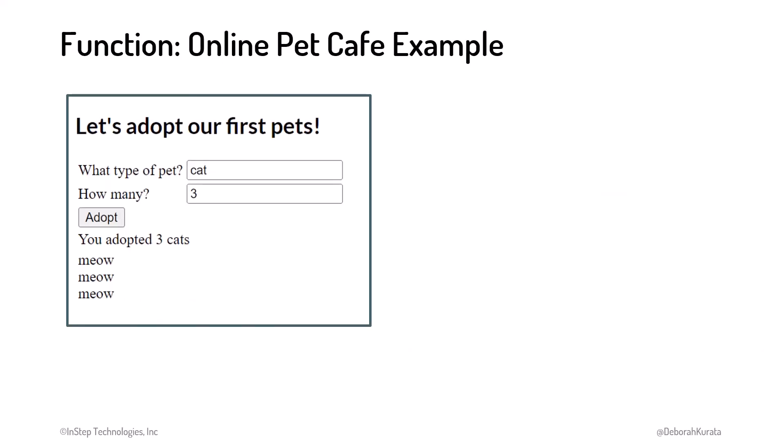Let's look at another example from our online pet cafe. Recall that the user enters the type and number of pets and clicks Adopt. The application then displays a message and a greeting from each of the pets. We want to simplify our main set of instructions by separating out the feature that prepares the pet greeting.